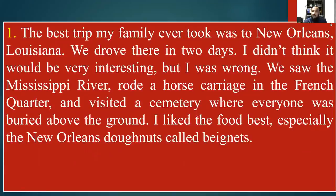Now see, this is a paragraph: 'The best trip my family ever took was to New Orleans, Louisiana. We drove there in two days. I didn't think it would be very interesting, but I was wrong. We saw the Mississippi River, horse carriages in the French Quarter, and visited a cemetery where everyone was buried above the ground. I liked the food best, especially the New Orleans doughnuts called beignets.' Now we have to identify which one is the topic sentence and where it is lying.